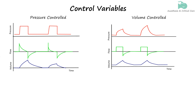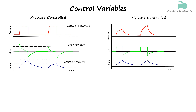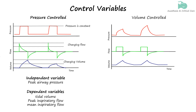Let's evaluate pressure as a control variable first. When pressure is controlled in a ventilation mode, the waveform of the pressure-time curve remains unchanged in response to variations in the respiratory impedance of the system. In contrast, the volume-time and flow-time curves undergo changes in both waveform and values depending on compliance of the respiratory system. In terms of independent and dependent variables, peak airway pressure is the independent variable, and tidal volume, peak inspiratory flow, and mean inspiratory flow are the dependent variables.